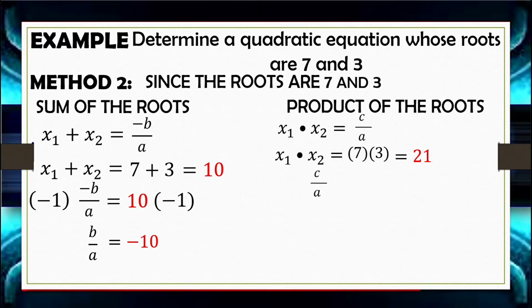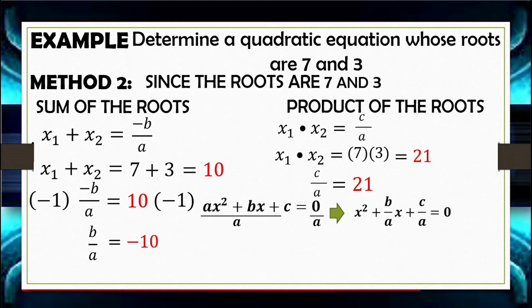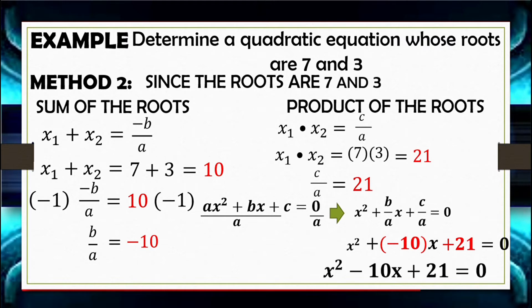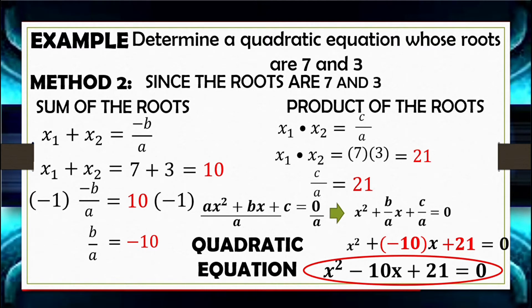Using the standard form AX squared plus BX plus C equals 0 and dividing by A, we get X squared plus B over A times X plus C over A equals 0. Substituting B over A equals negative 10 and C over A equals 21, our quadratic equation is X squared minus 10X plus 21 equals 0. This is the same result as the reverse method of factoring.